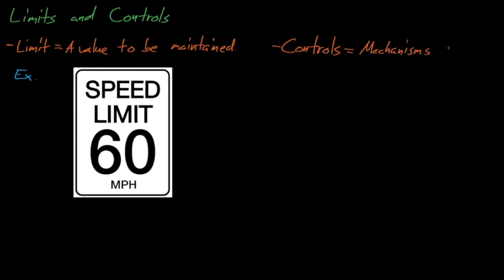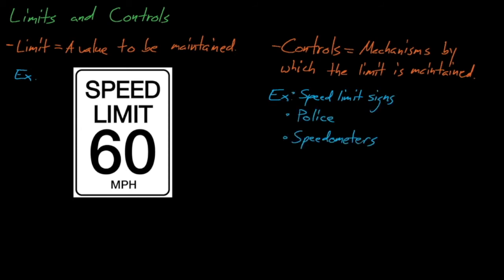Controls are the mechanisms by which limits are maintained. If the speed limit is 60 miles per hour, then the controls that maintain a car's speed can include speed limit signs, police enforcement, or the car's speedometer.